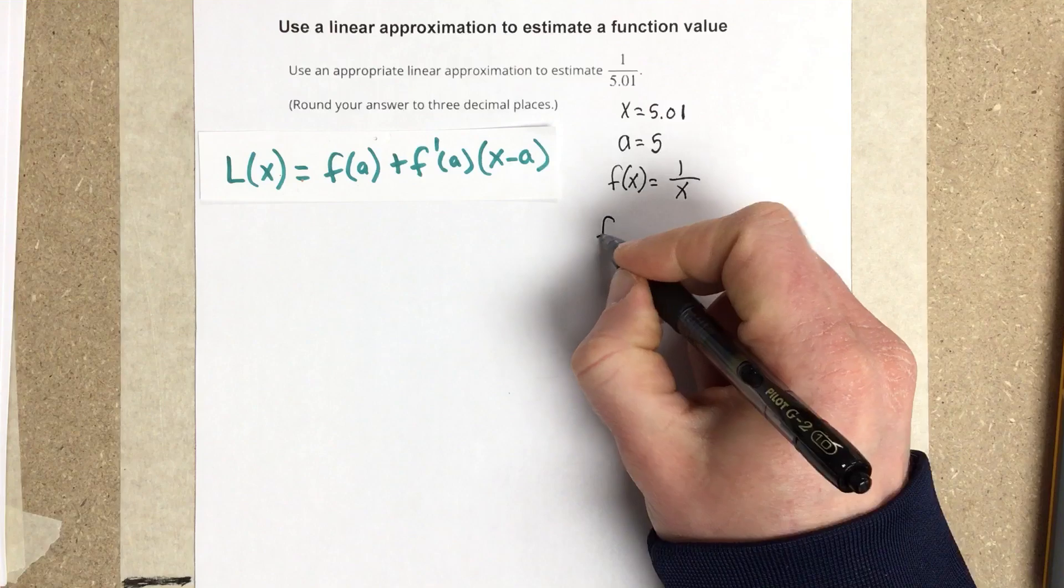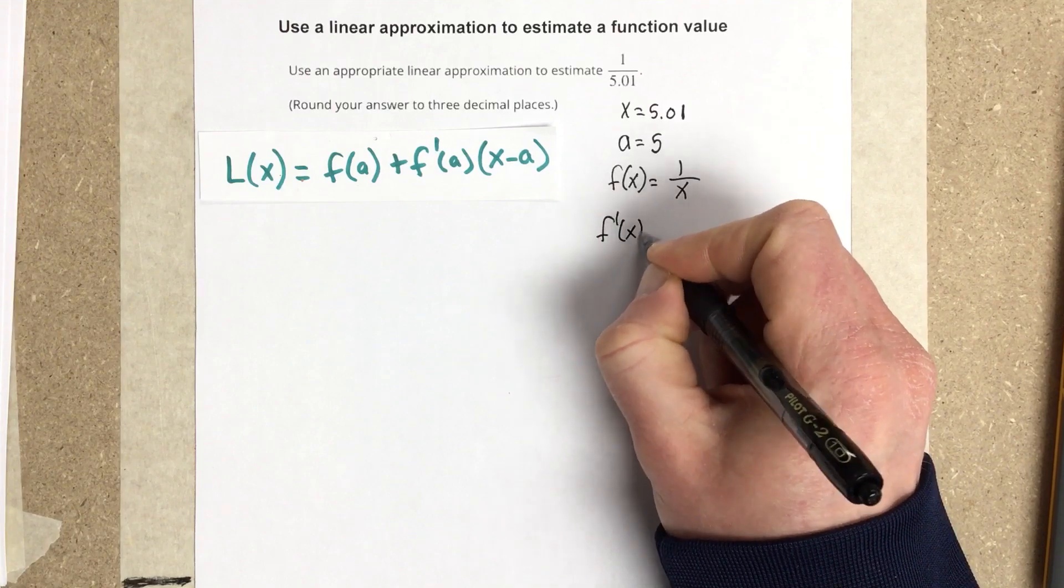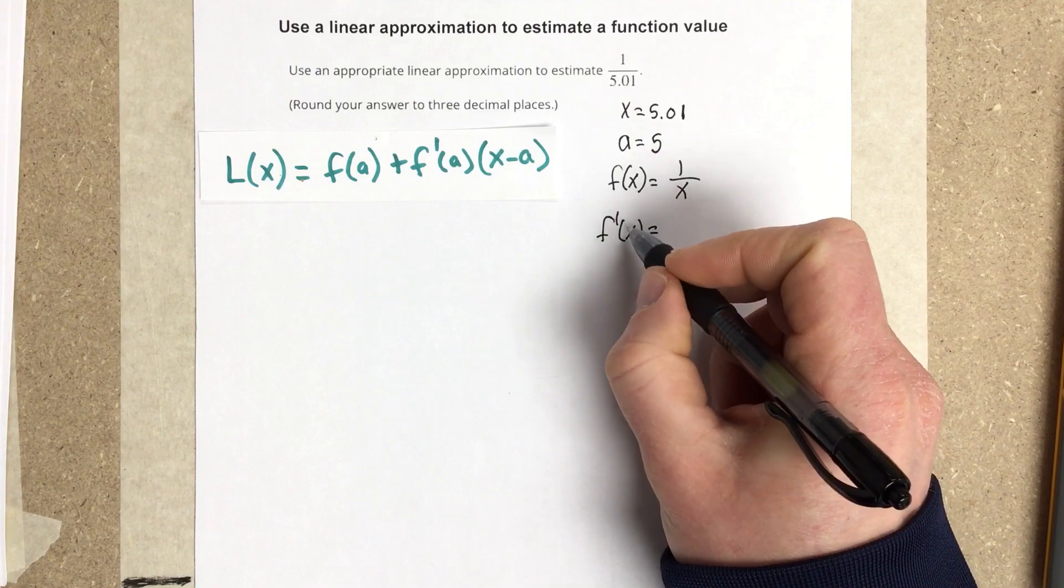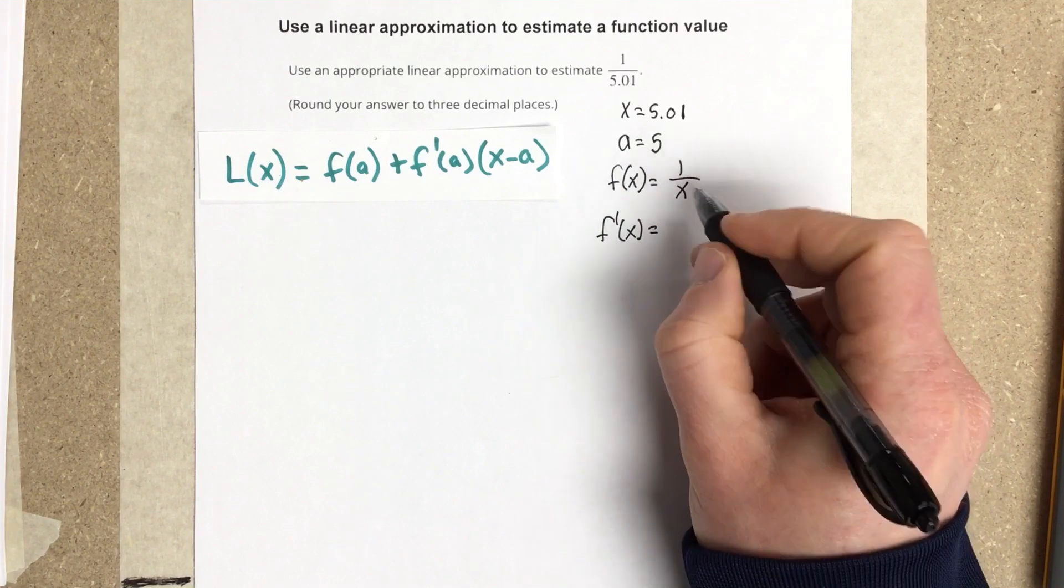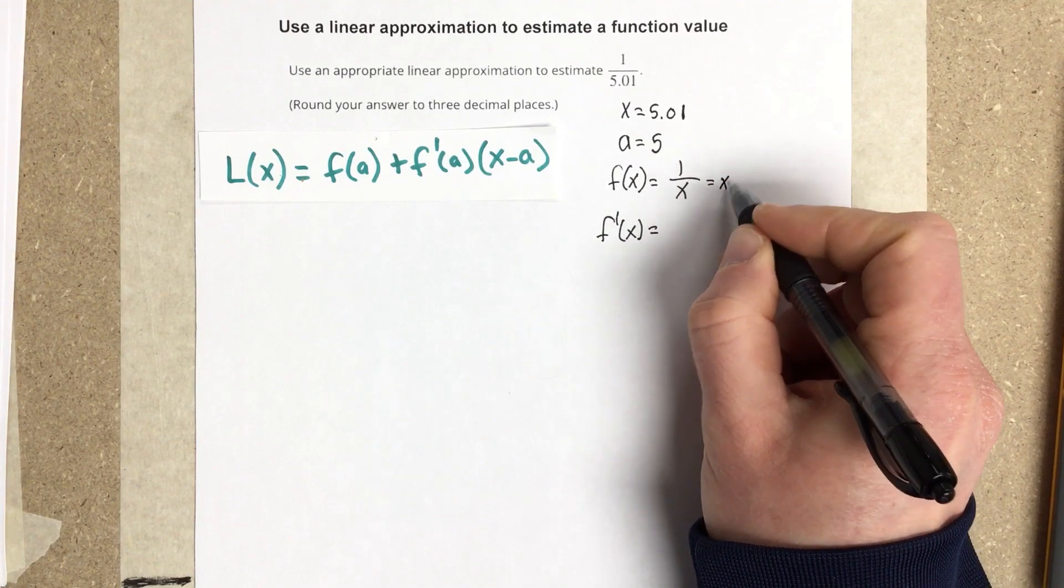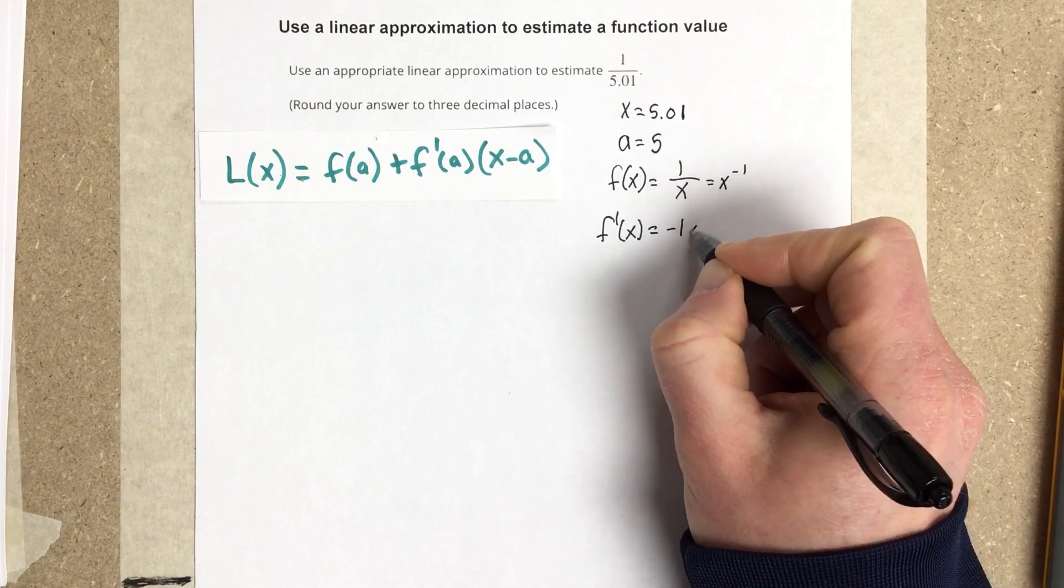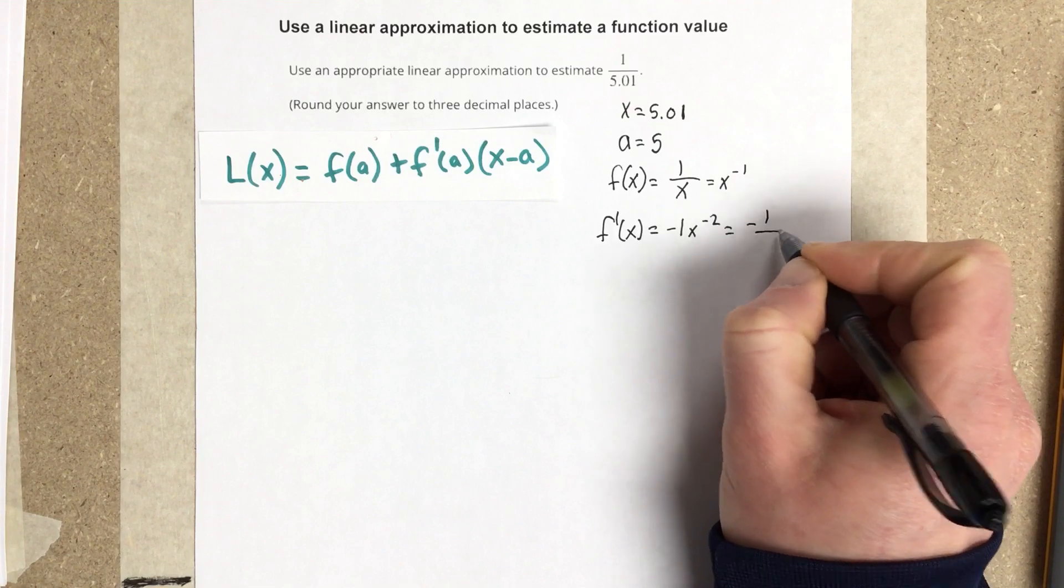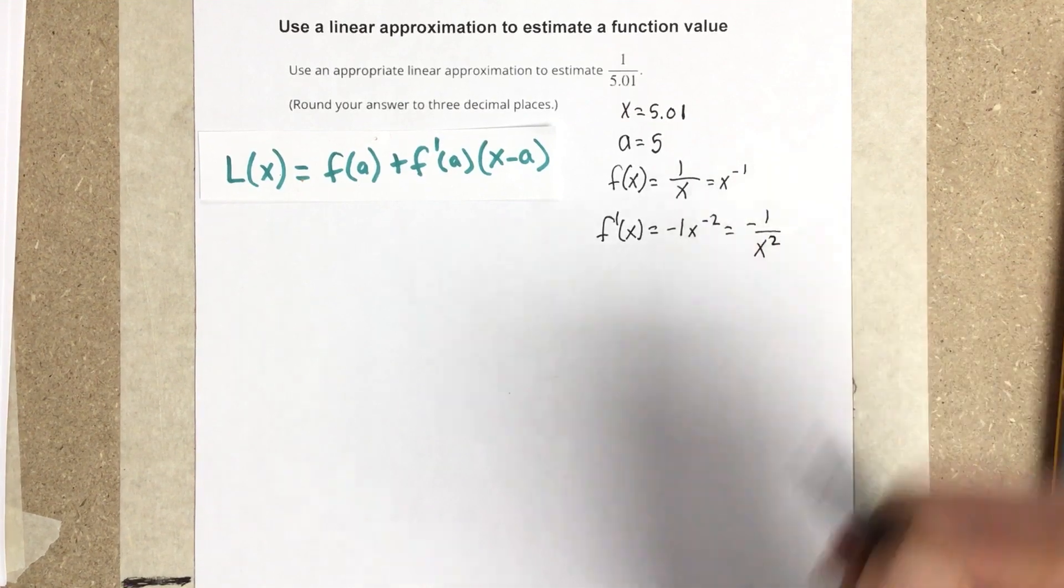Now, I want to find the derivative because I need it for this linear approximation. I need f prime of a, so I need to find the derivative of this function. Well, this is really equal to x to the negative 1. So that's negative 1 x to the negative 2, which equals negative 1 over x squared when you take the derivative there.